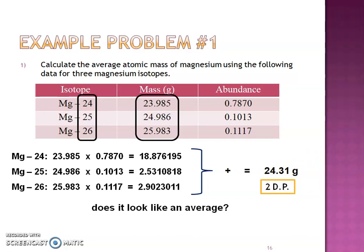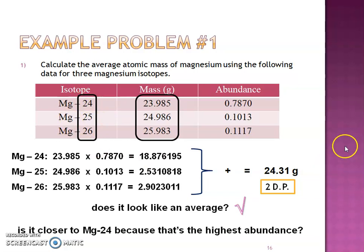So let's do a checkpoint. First checkpoint, does it look like an average? Is it between 24 and 26? Yes, it is. Is it closest to 24 because that's our highest abundance? Absolutely. So we did good. All right. So pause the video and kind of write all that information down.